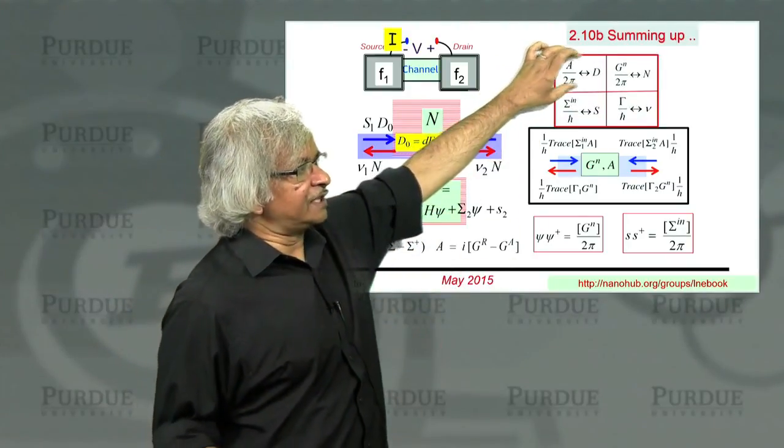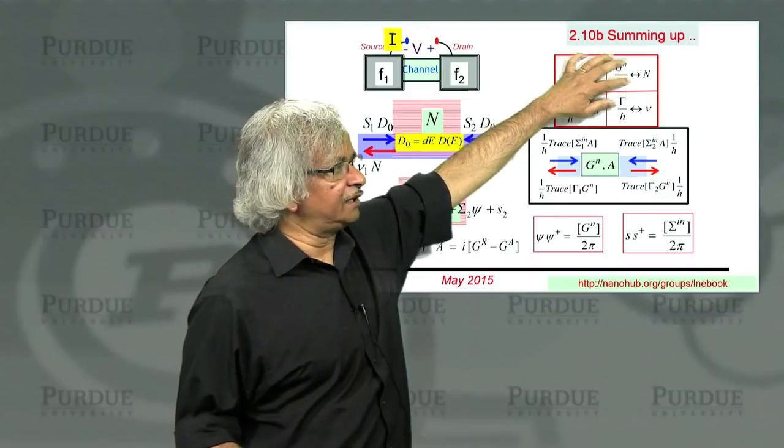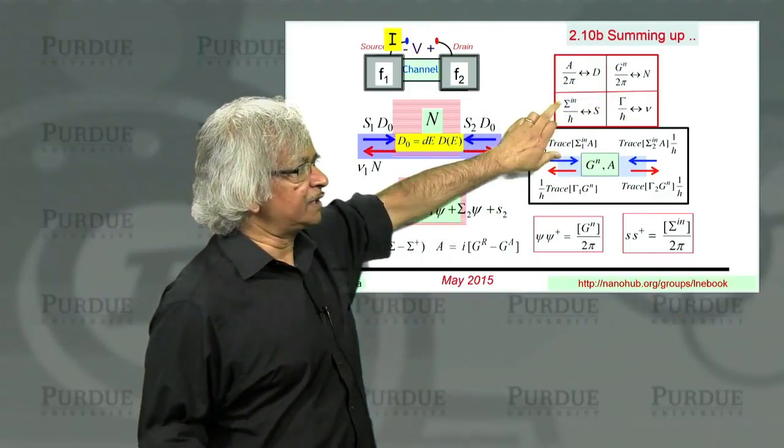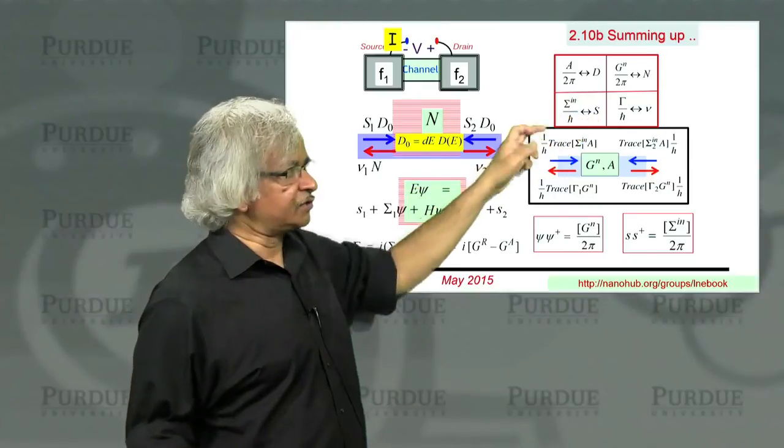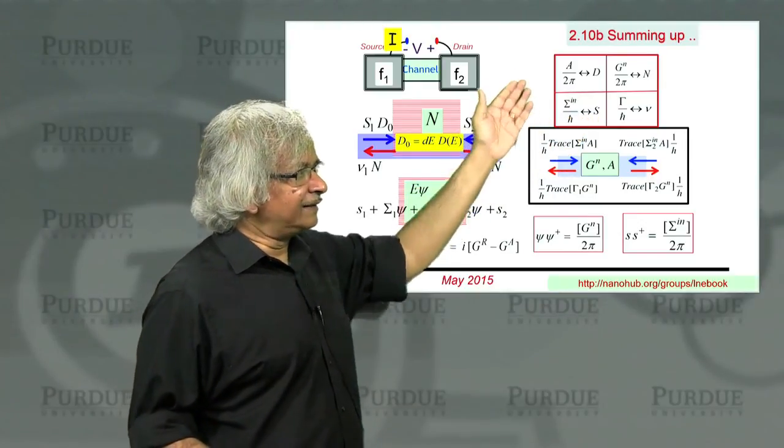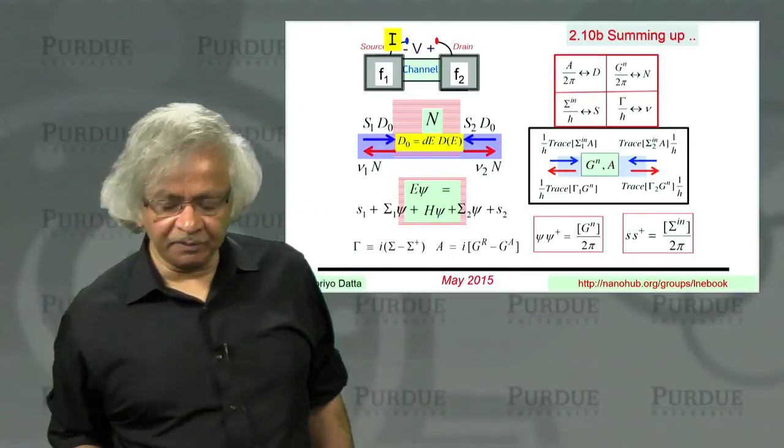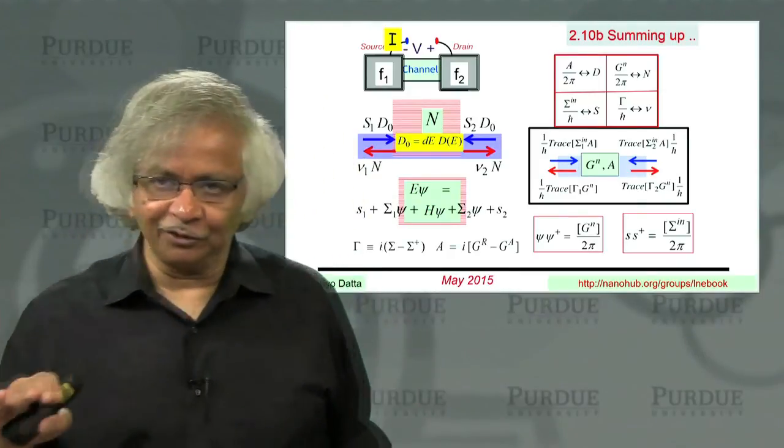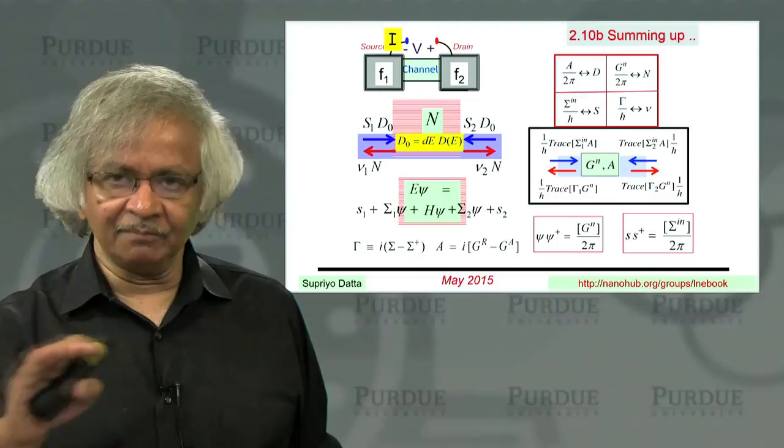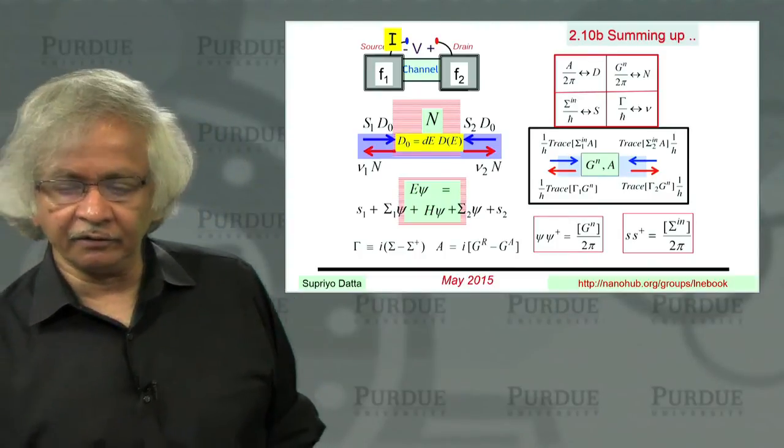There are these analogies. A, which is like density of states, GN like number, gamma like nu, and sigma N is like the source strength. This correspondence is useful to keep in your mind as you try to navigate your way through all these new symbols and concepts that we are introducing.